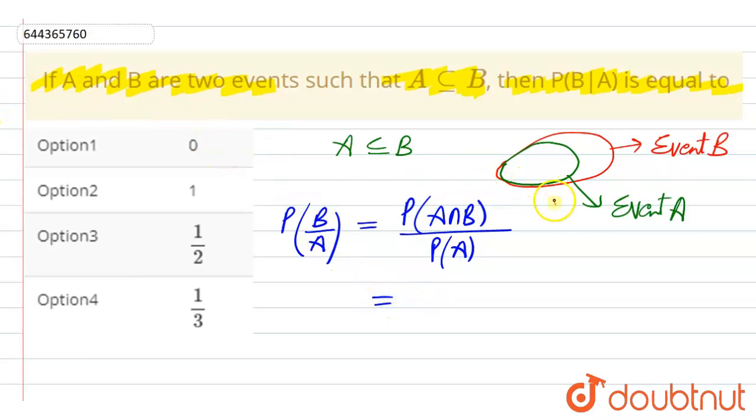Now if you see here, probability of A intersection B would be equal to the intersection part, which is equal to event A. So this is equal to probability of A. So we can write this as probability of A divided by probability of A, which is equal to 1.